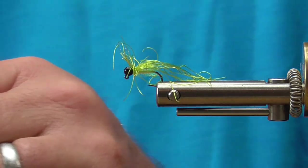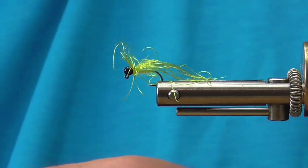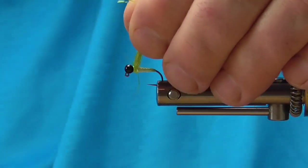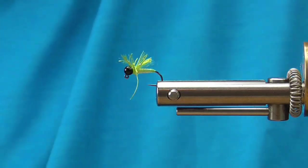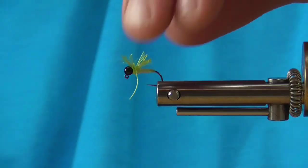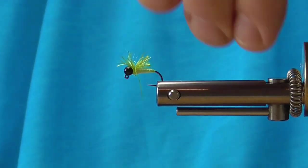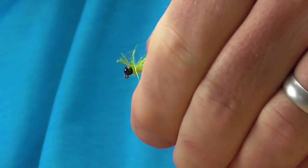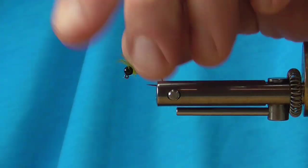We're going to whip finish that. And then we're going to take all of this and bring it up about an eighth of an inch. And move it around a little bit. If you've got any stragglers, you can trim those off.